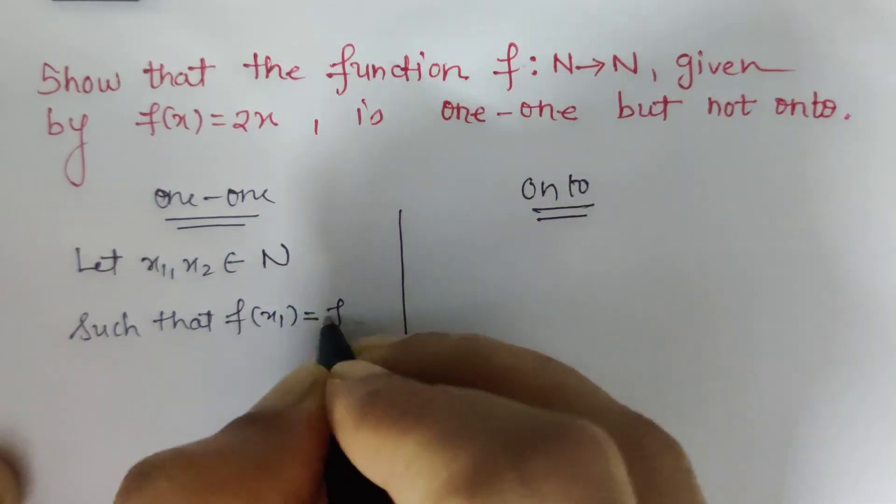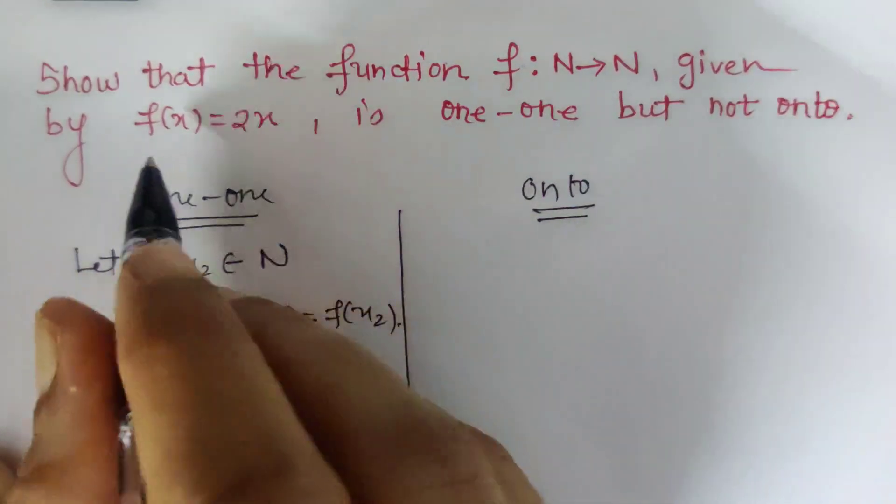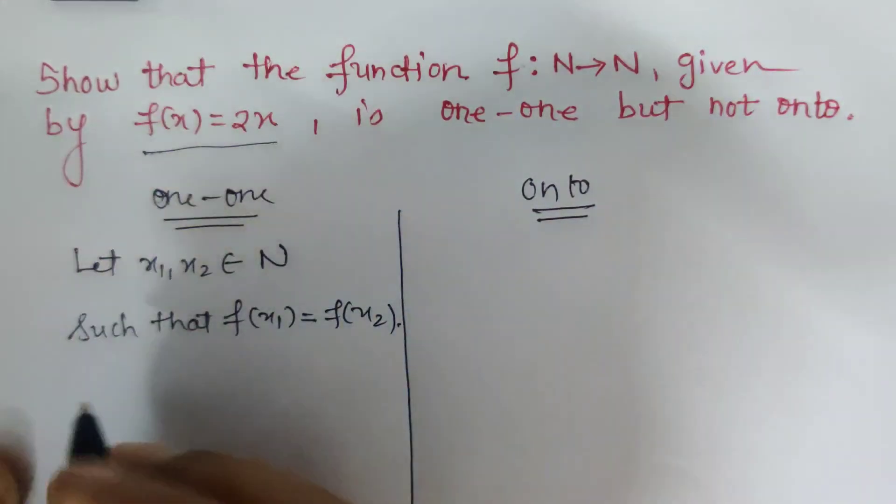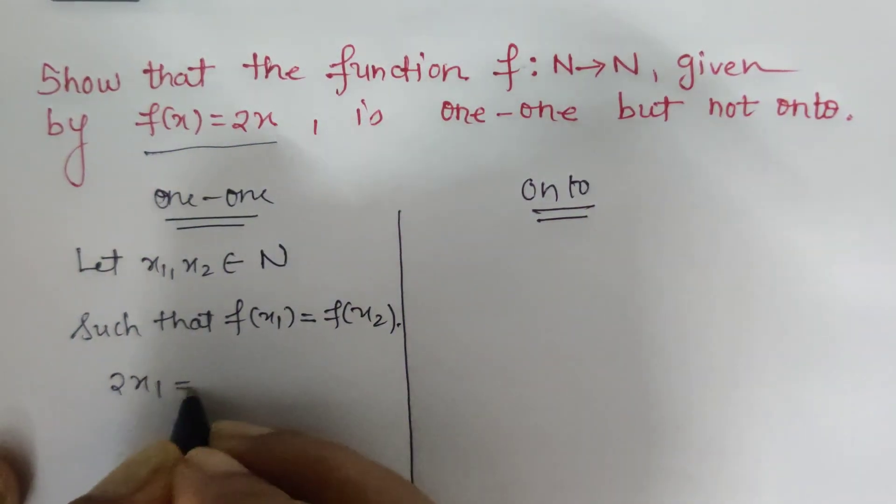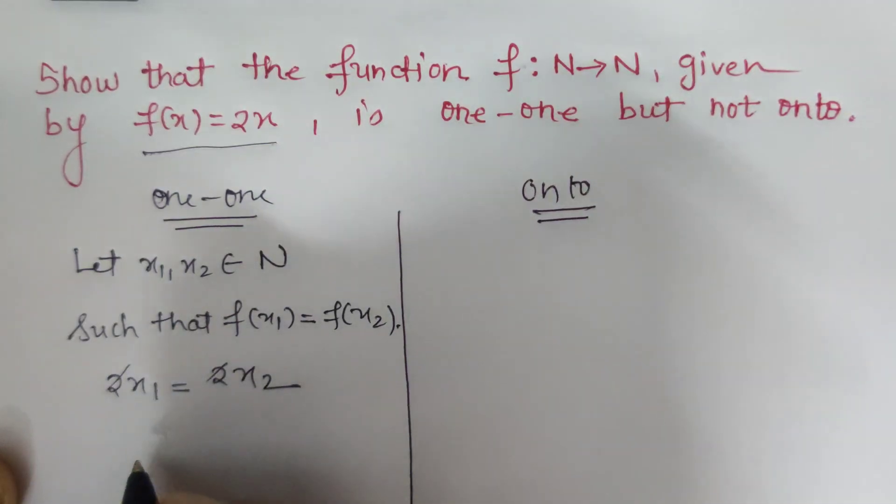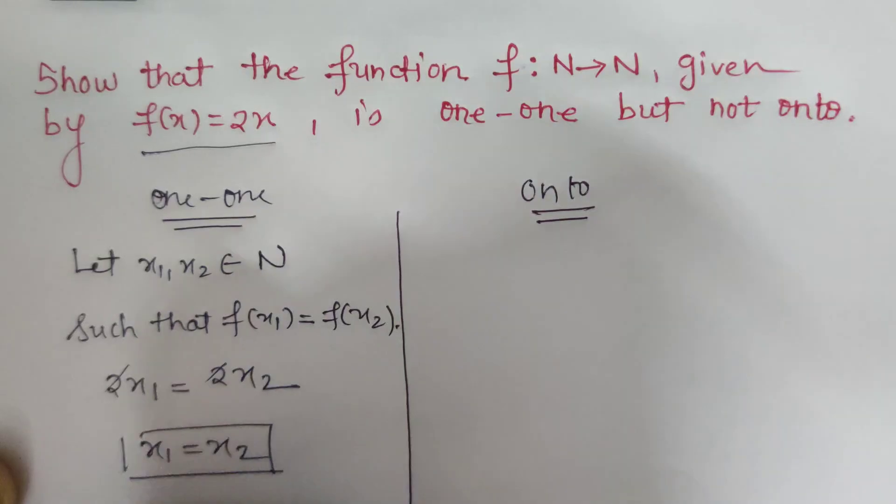So here fx is given by 2x, so 2x1 is equal to 2x2. The 2 gets cancelled and we are left with x1 is equal to x2. Therefore, f is one-one.